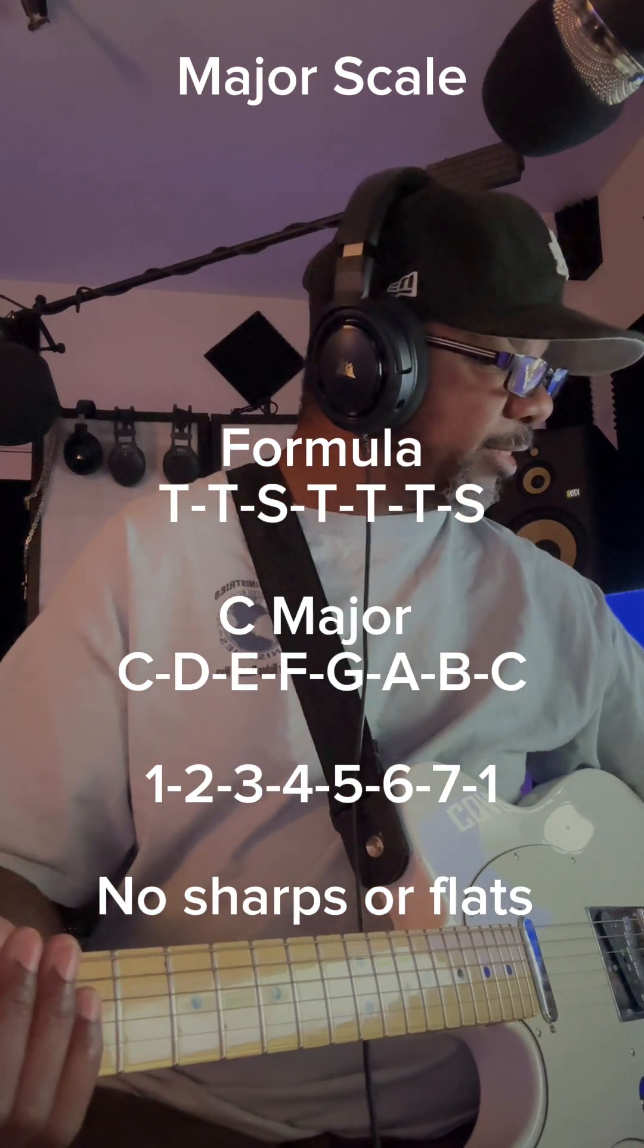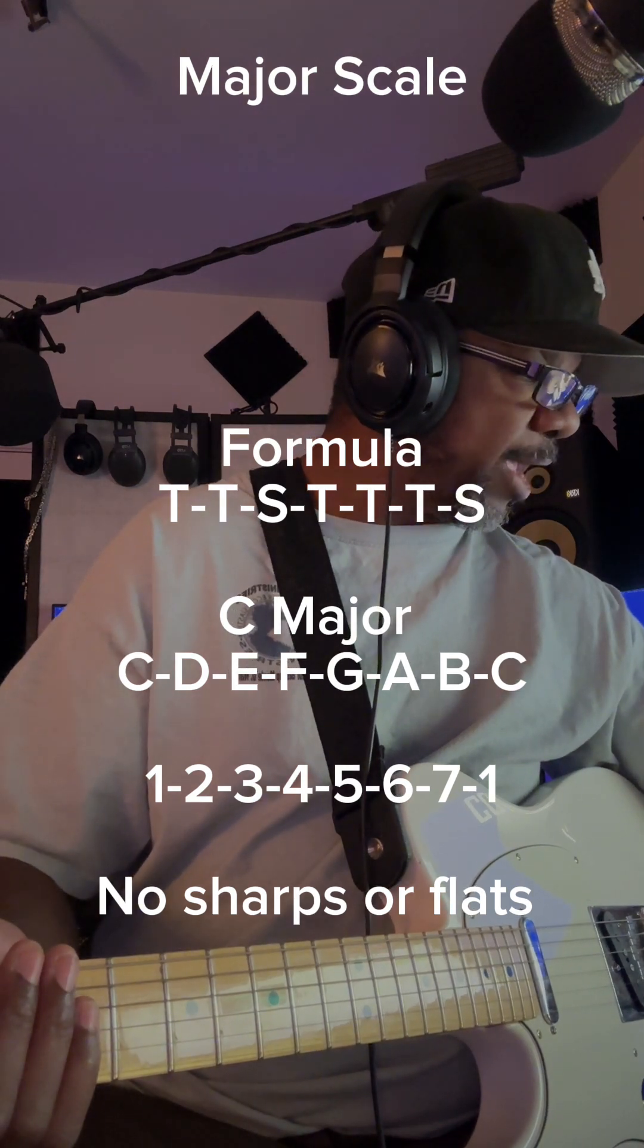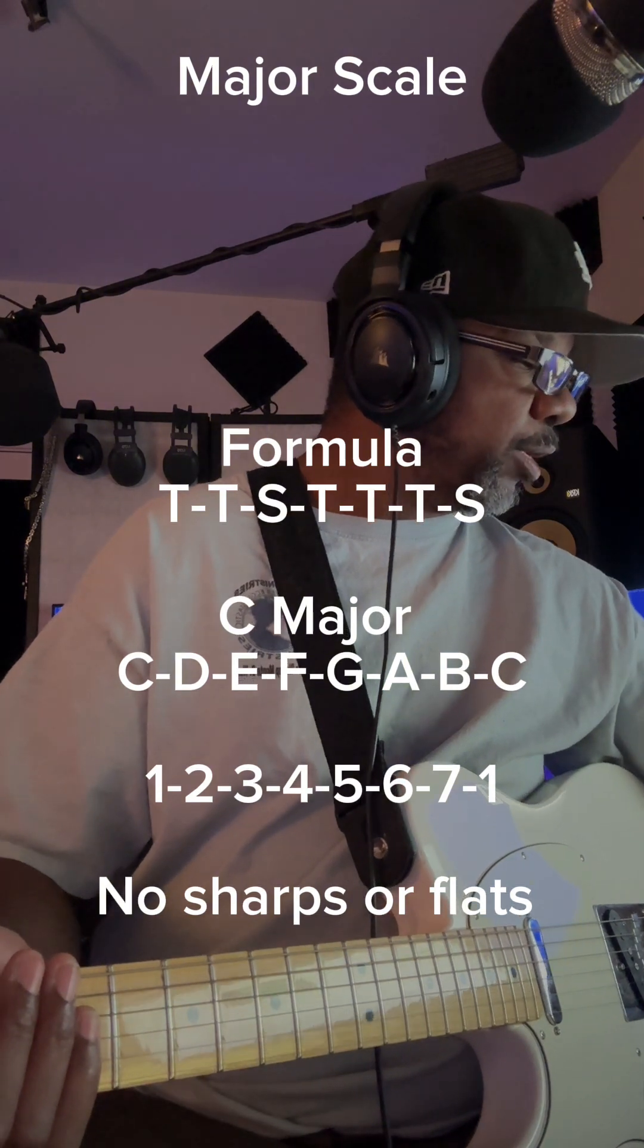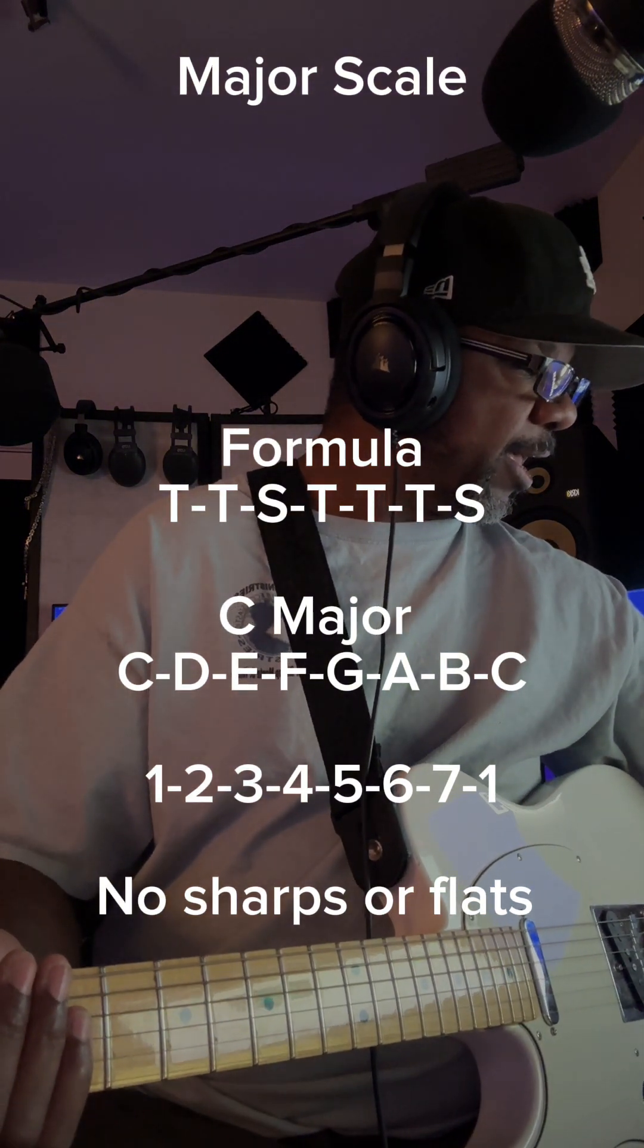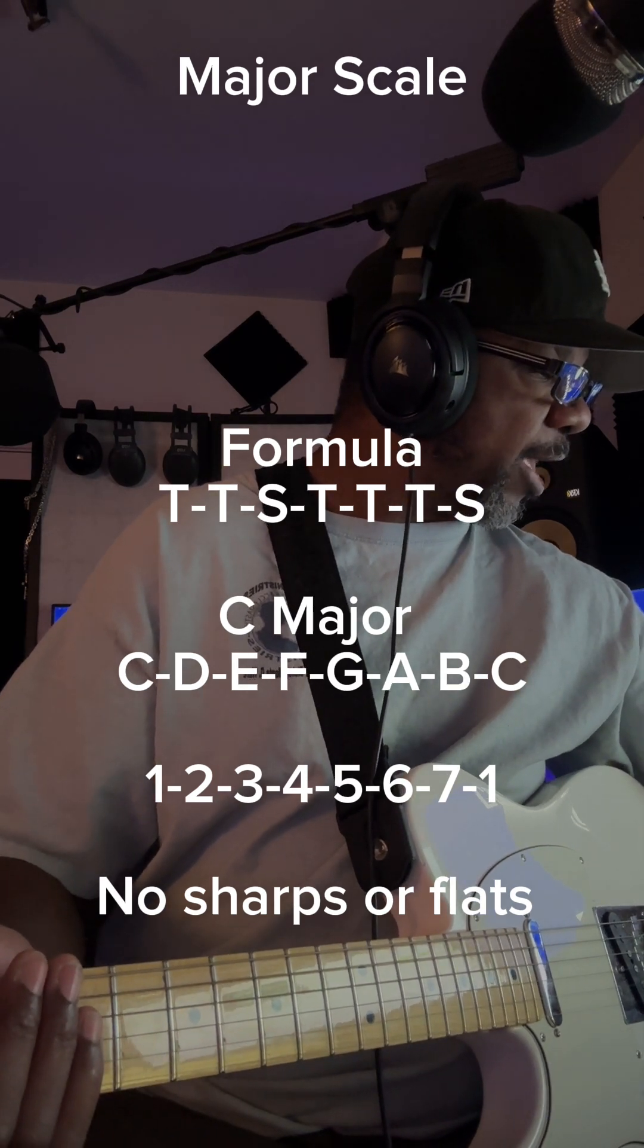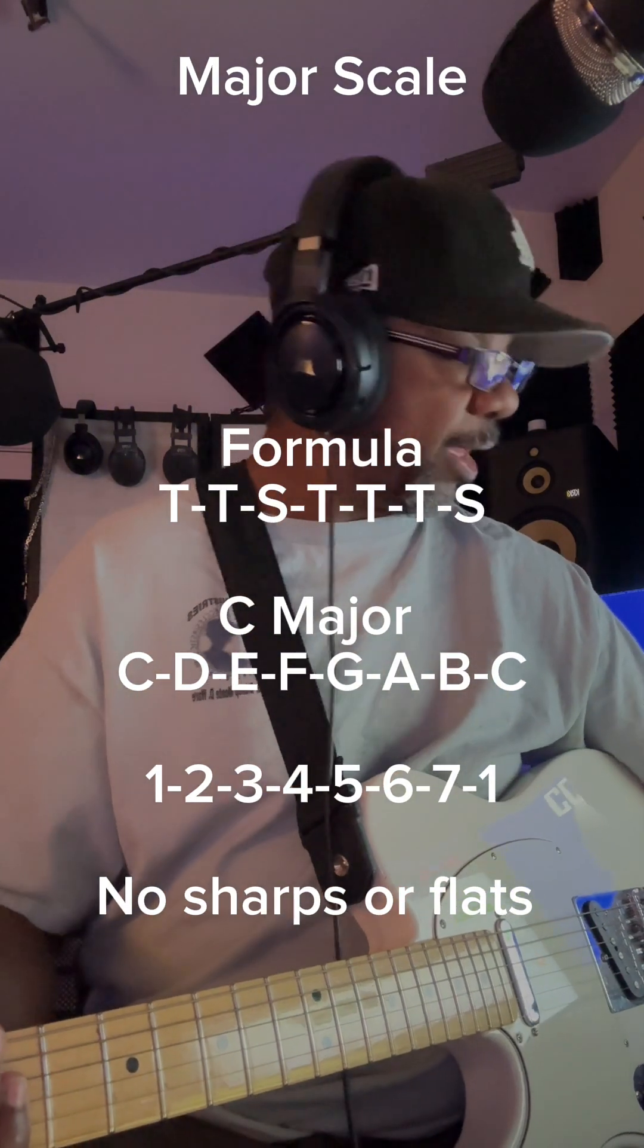Now, there is a formula to finding out what that is. You have the notes, like I said, C, D, E, F, G, A, B, and C for a C major.